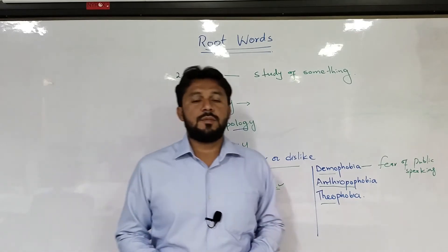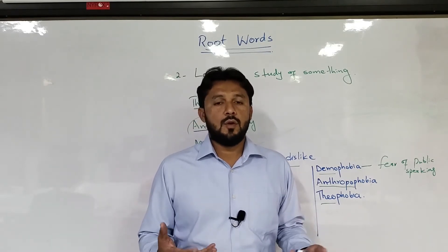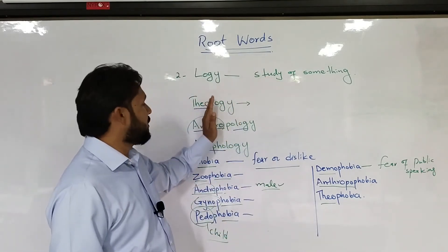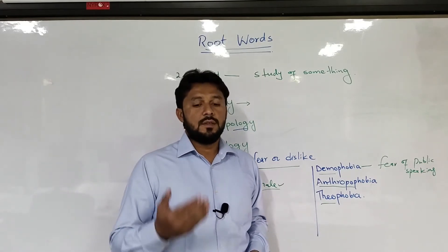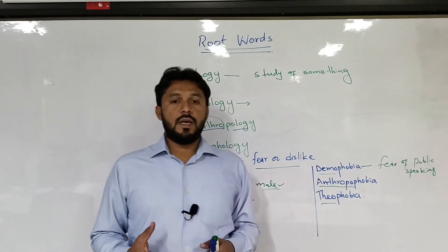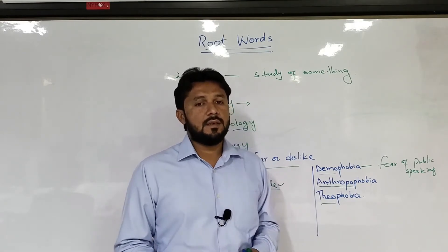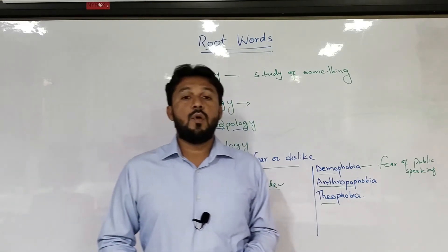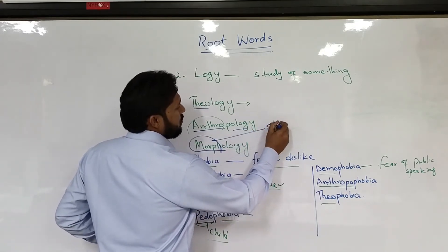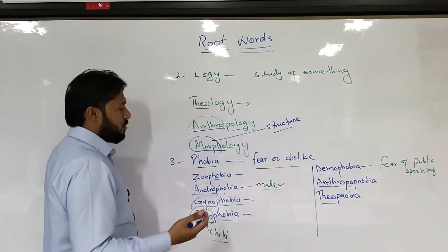The second root word is 'logy,' which means 'study of something.' You will find many words ending in 'logy.' For example, 'theology' — since 'theo' means religion, theology is the study of religion. 'Anthropology' — 'anthro' means human being, so anthropology is the study of human beings. 'Morphology' — 'morph' means structure, so morphology is the study of structures, a term used in English linguistics.